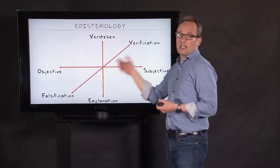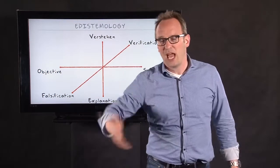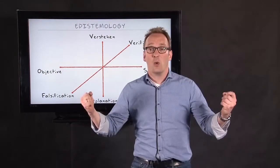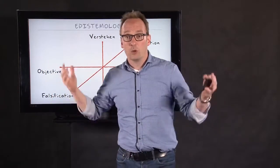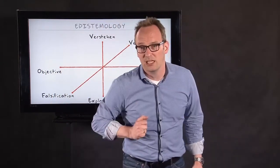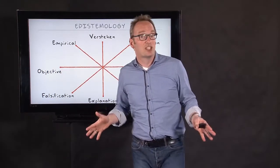A third dimension can be this dimension. How do we get a knowledge? Well, by verification. Every time we see a white swan, we would say, there's another white swan. It helps us creating the theory that all swans are white. And in falsification, we try to test that theory.